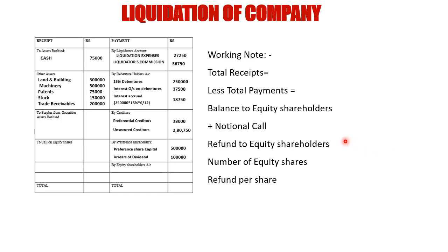The format of the working note is: Total receipts less total payments gives the balance to equity shareholders. Add notional call, which gives refund to equity shareholders. Dividing by number of equity shares gives the refund per share. This is the basic format to follow whenever partly paid equity shares are given.